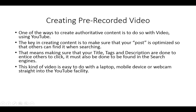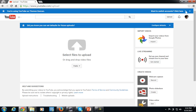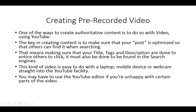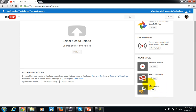This kind of pre-recorded video is very easy to do. If you have a laptop, a mobile device that allows you to record video, or a webcam, you can actually record straight into the YouTube facility — you don't really even need any software. You can literally go right here inside of YouTube and capture the information on your webcam. As you may have noticed in the same screen, YouTube actually provides you with a YouTube editor that you can use if you're unhappy with certain portions of the video. That editor is conveniently located right inside the same screen where you can edit, cut in, or cut out anything you don't want.